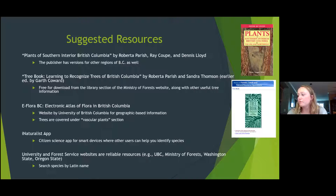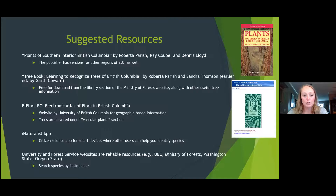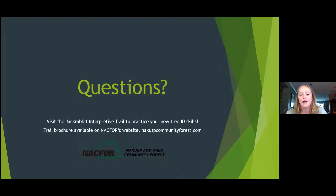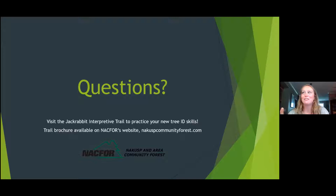I would search by Latin name if you're looking things up online, just to make sure you have the right species. One thing I'd suggest before we go into questions: check out the Jackrabbit interpretive trail at the Wensley cross-country ski trails up upper Brass Road, just outside of town. It was set up by NACE and they have signs on trees along the trails — throughout the walk there are about seven to ten tree signs. It's just a nice way to confirm an ID when you're on a nice hike. There's a trail brochure available on the website and we just cleaned the trail a couple of weeks ago, so I know there's no blowdown and it's in good walking condition.